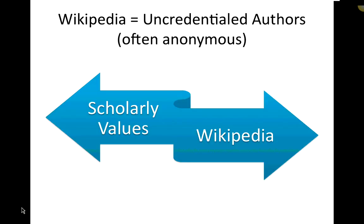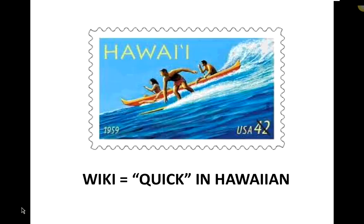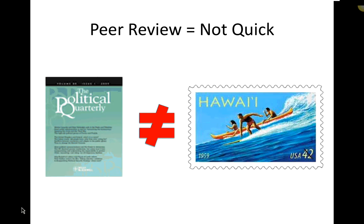Here's what we all know about where the values of Wikipedia overlap or diverge from traditional scholarship. Wikipedia often has anonymous, typically uncredentialed authors — that's a conflict with traditional scholarly values. Another area where Wikipedia differs — and actually in its favor — is the quickness of editing and updating. Peer review, of course, is not quick. So quickness is an advantage for Wikipedia compared to traditional scholarship.